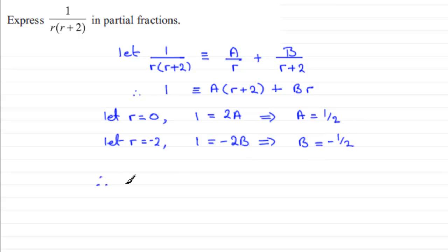So we can substitute these values in and we have 1 over r times r plus 2 is identical then to having A over r. A is a half. Now instead of writing a half over r if we times top and bottom by 2 we end up with 1 over 2r. Hold back from the plus until you've checked your B value. B is minus a half so you've got minus a half over r plus 2 which reduces to minus 1 divided by 2 times r plus 2. All right.